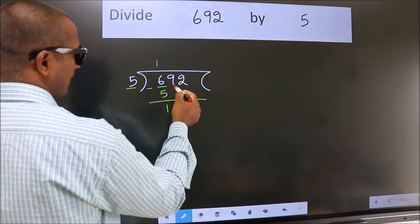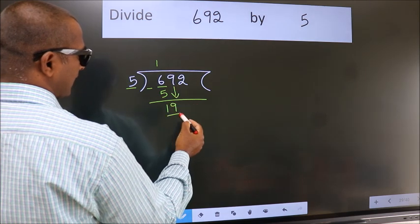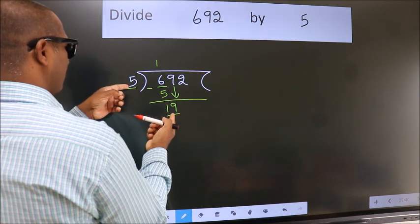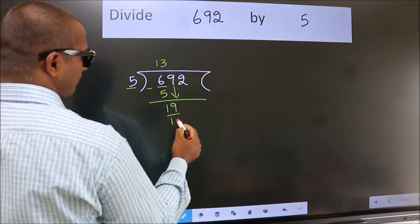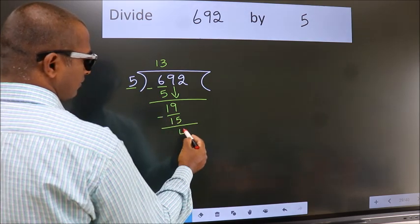After this, bring down the beside number. So 9 down, giving us 19. A number close to 19 in the 5 table is 5 times 3 is 15. Now we should subtract. We get 4.